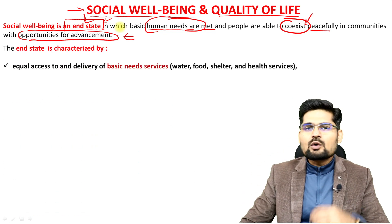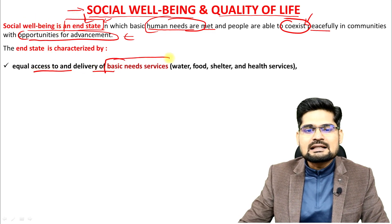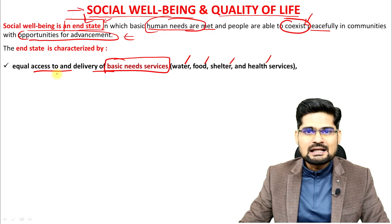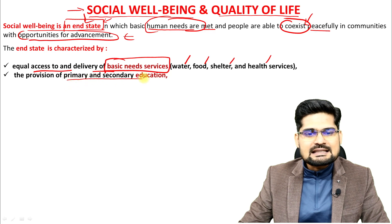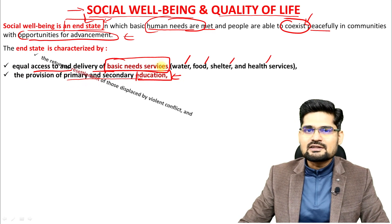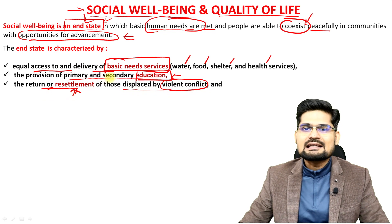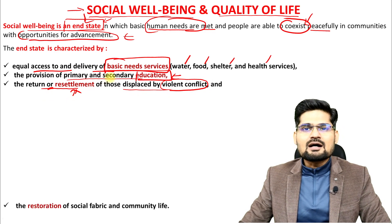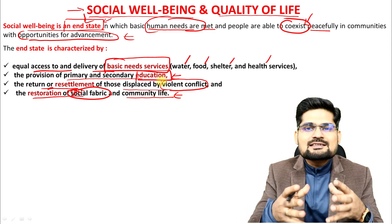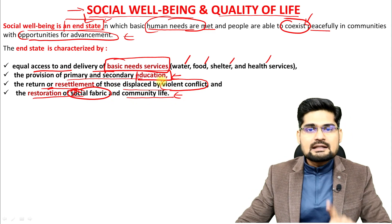What are the characteristics of this end state? First, equal access to and delivery of basic needs and services — water, food, shelter, health services. Second, provision of primary and secondary education. Third, the return or resettlement of those displaced by violent conflict, riots, or natural displacement. Fourth, restoration of the social fabric and community life — if community understanding or social fabric is disturbed, restoring it is the end goal.